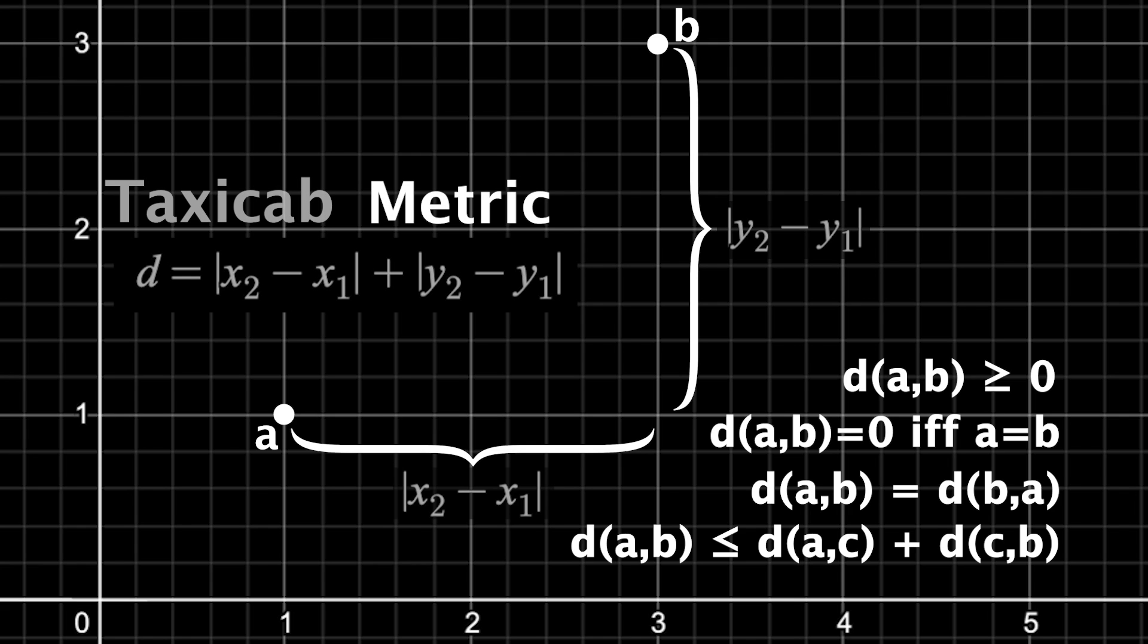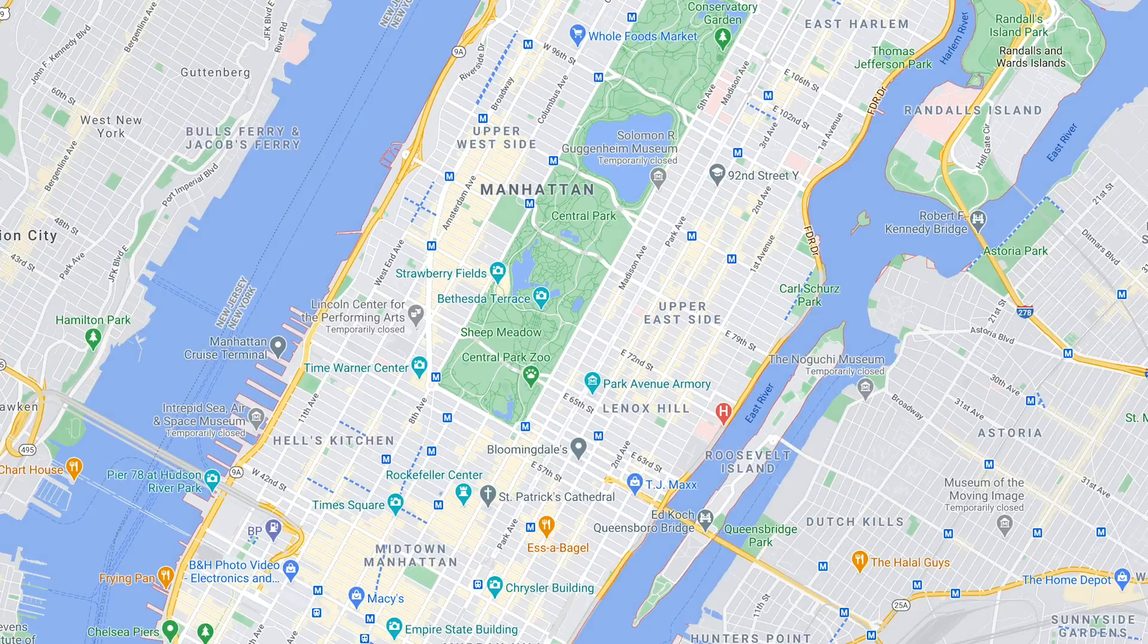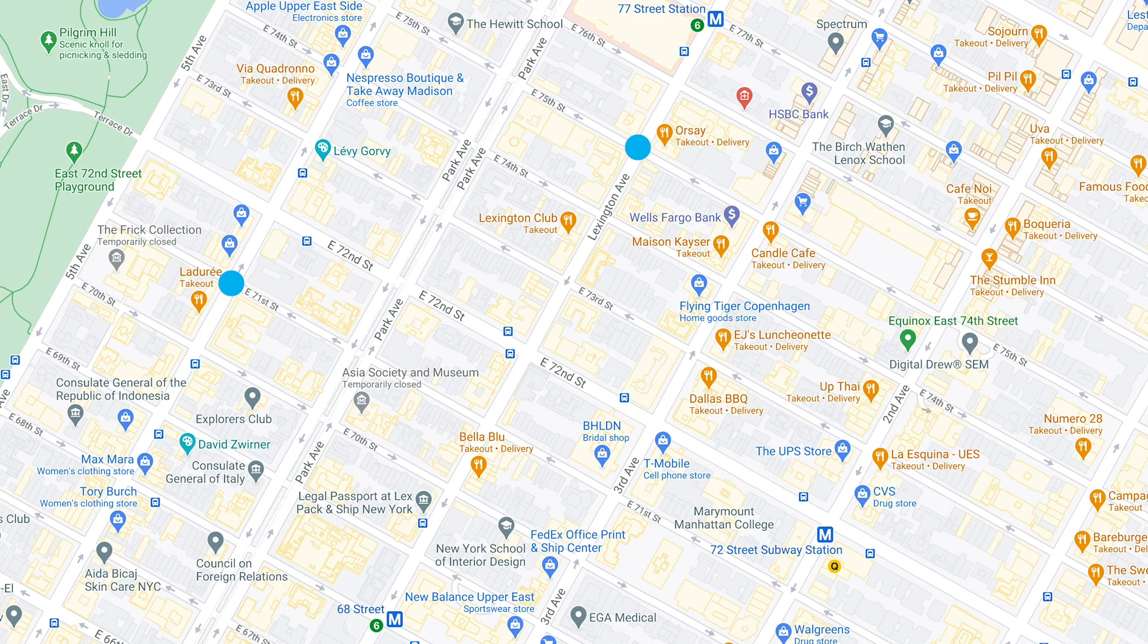This is known as the taxicab metric, or also the Manhattan distance. Because in an area like Manhattan, where the streets are often grids like this, if you want to go from one intersection to another, there's a good chance the distance of that shortest route is going to match the distance given by the taxicab metric.